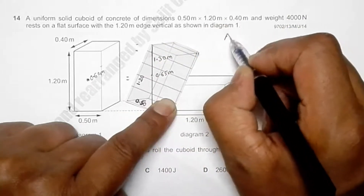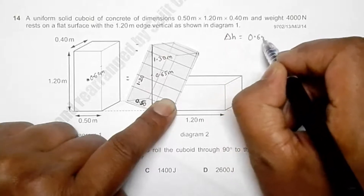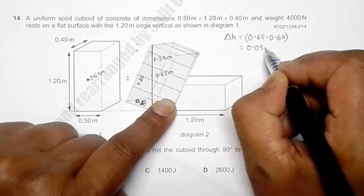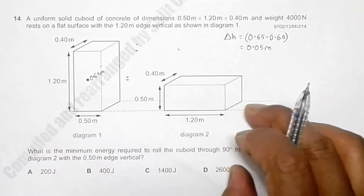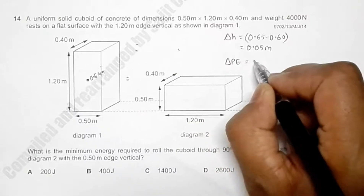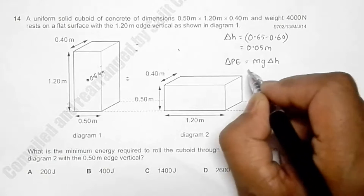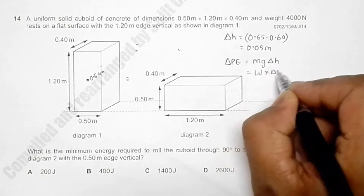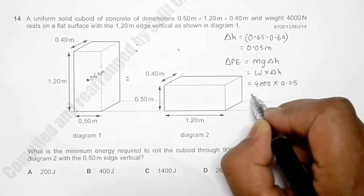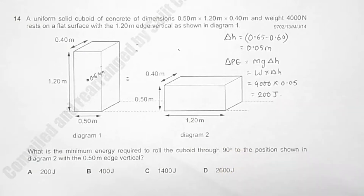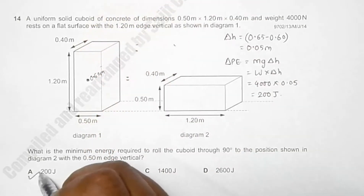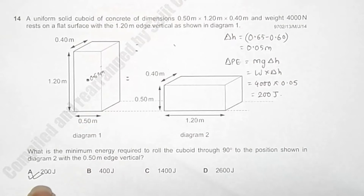The change in height of the CG is 0.65 minus 0.60, which equals 0.05 meters. The change in potential energy is weight multiplied by delta-h, equal to 4000 times 0.05, which equals 200 Joules. So the minimum energy required to tip the cuboid is 200 Joules, which is the correct answer.